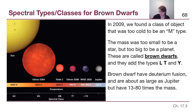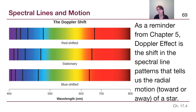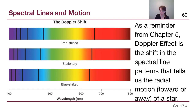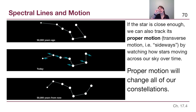The remaining topic for chapter 17 covers additional things we can do with a star's spectrum. We've established that a spectrum tells us what type of star it is, and as a reminder from chapter 5, we know the Doppler effect can tell us if a star is moving towards or away from us. By tracking an individual star from one year to the next over decades, we can also track its sideways motion across the sky — this is called proper motion.